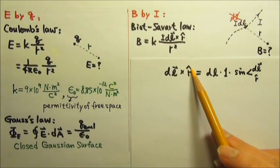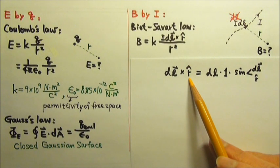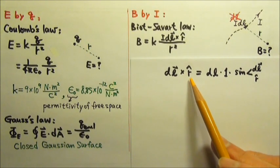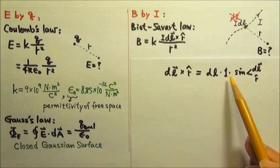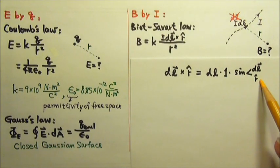Remember, this hat here tells us this is a unit vector, a vector with length 1. So dL cross this unit vector equals dL times 1 times sine of the angle between the two vectors.